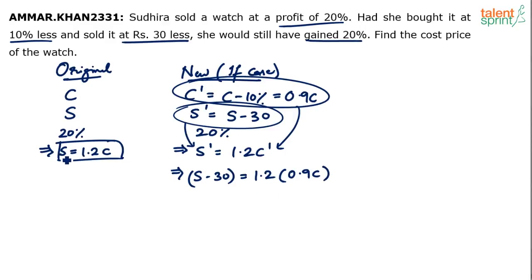Now if you observe there are two equations. One equation in terms of S and C. The other equation is also in terms of S and C. Two equations and two variables, can you solve? Yes. He is asking us to find out the cost price. Just substitute S equals 1.2C in this place. So overall what do we get? S is 1.2C. So 1.2C minus 30 equals 1.2 into 0.9C.